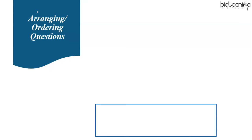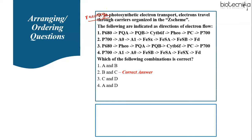The second type of question is arranging or ordering questions. In such questions, you need to rearrange options or put them in sequence — in increasing or decreasing order, or arrange the steps of a technique or process in the correct order. For example, a question on photosynthetic electron transport asks about electrons traveling through carriers organized in the Z scheme, and four sequences of electron flow are given. You have to find which combination is correct.